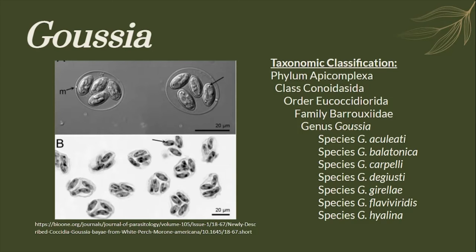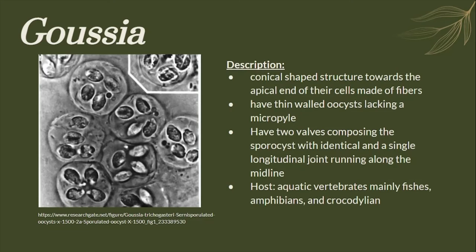Here is the taxonomic classification for the genus Gusha. The genus Gusha are conical-shaped structures towards the apical end of their cells, made of fibers. It also has thin-walled oocysts lacking a micropyle, with two valves composing the sporocyst with a single longitudinal joint running along the midline. Its usual hosts are aquatic vertebrates, mainly fishes, amphibians, and crocodilians.